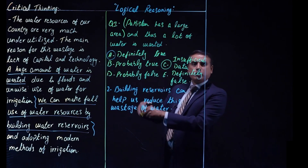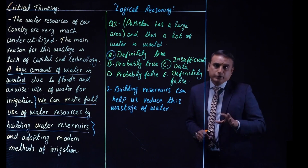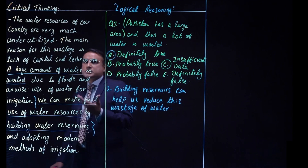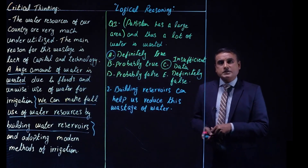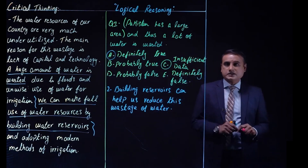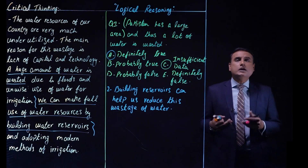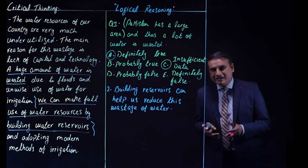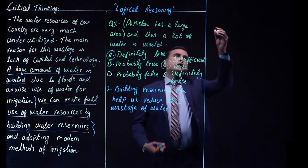If we evaluate that statement, it is evident that building water reservoirs can help us reduce wastage of water. So in that particular case our option will be Alpha — definitely true — because we have been told very clearly that building water reservoirs can help reduce the wastage of water. This is one way critical thinking questions can be asked.